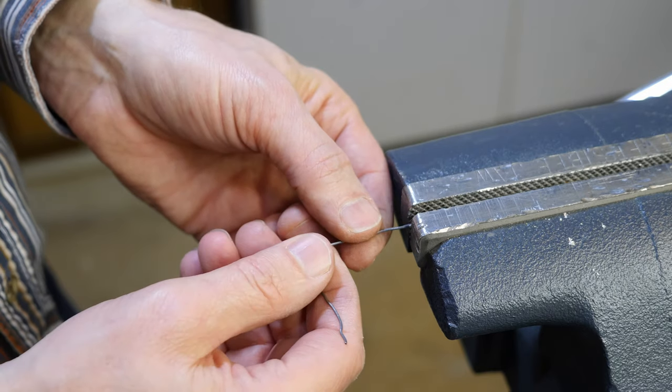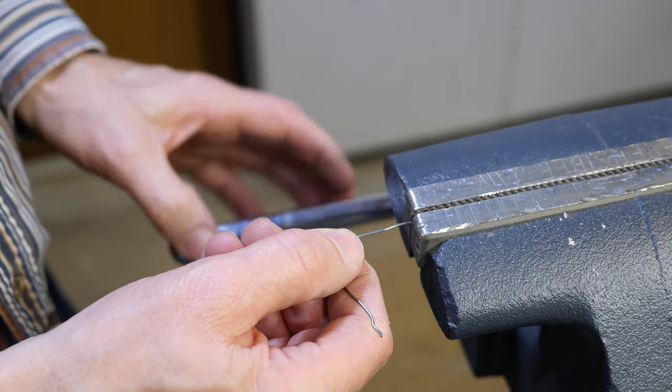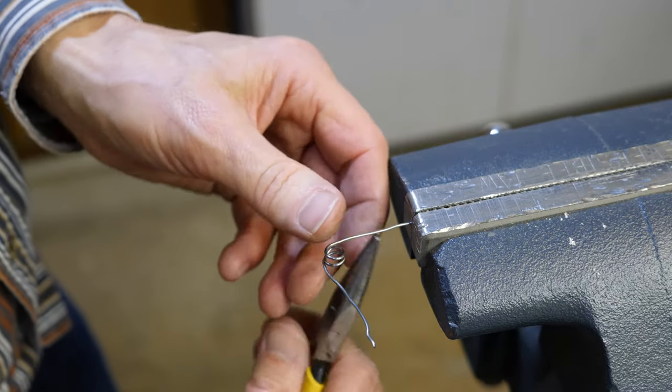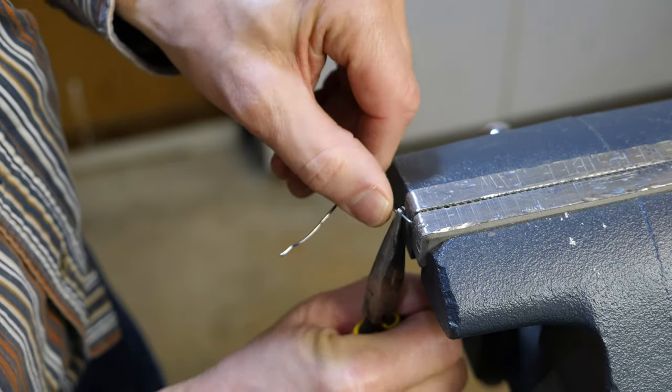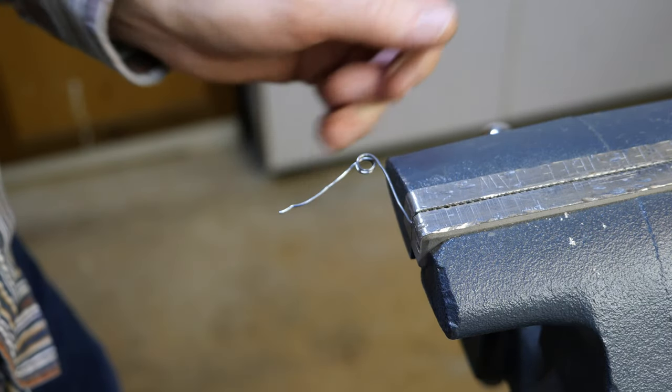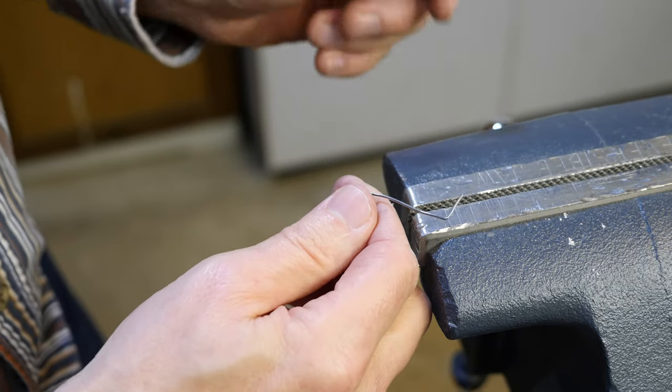To do that, I put it in the vise, tighten down the vise, and then I use my needle-nose pliers to bend the wire around. Another easy way to do this would be to tap it with a hammer. That's probably easier than trying to bend it with the pliers. And if you tap the wire with a hammer, you can get a nice crisp bend in it.